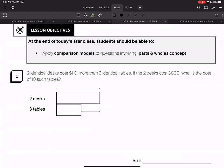Two identical desks cost 110 more than three identical tables. You're given the cost of the two desks. Let's draw a simple comparison model: two desks, 110 more, so I would place 110 here. That is the difference. The cost of the two desks is 800.